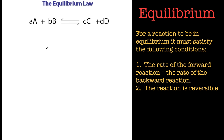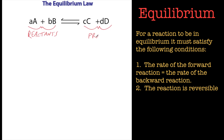Let's look at this equilibrium here — it's a generic one using letters A, B, C, and D. If we take these reactants and add them together, knowing the reaction is in equilibrium — going backwards and forwards — it doesn't always go to completion. It's a reversible process, so some products can go back to reactants. These are the reactants — what we started with — and these are the products.